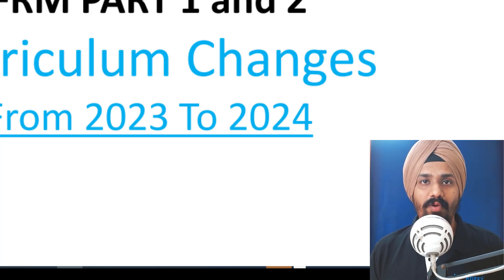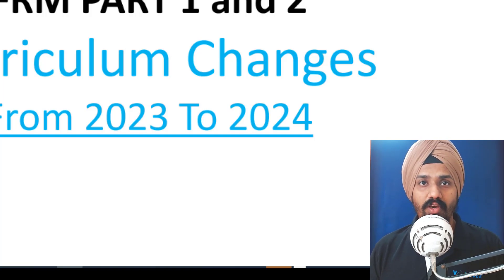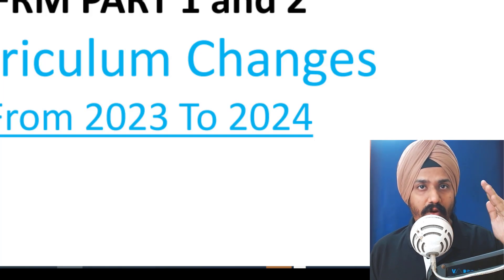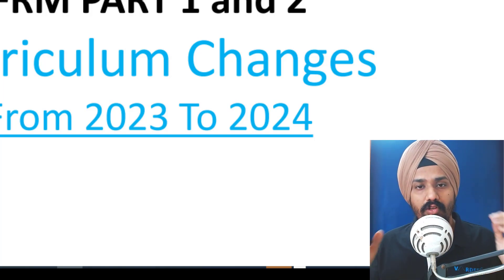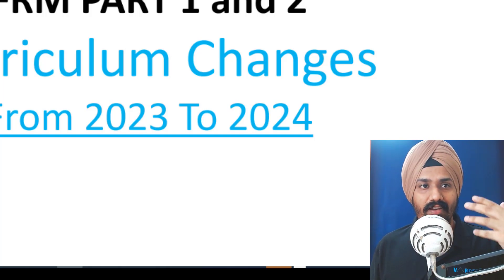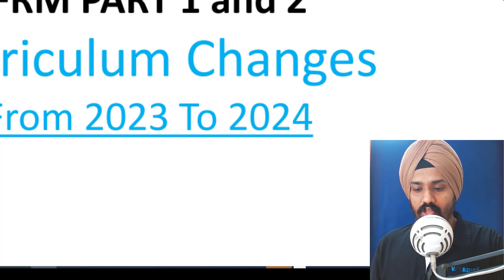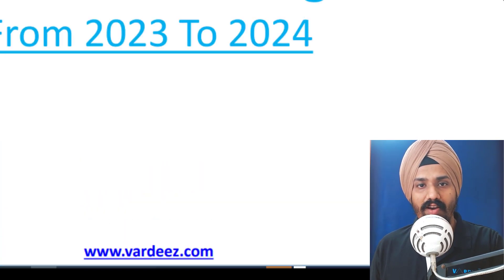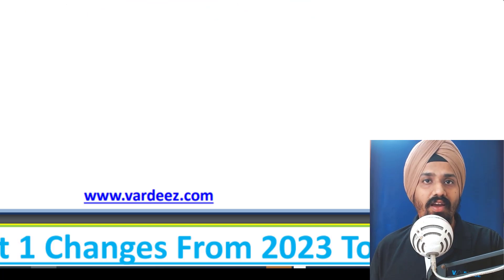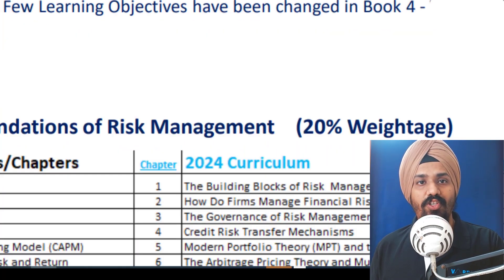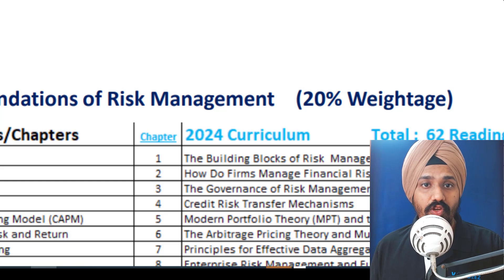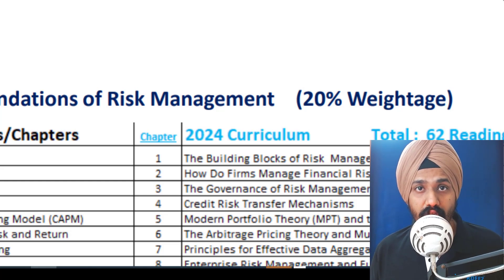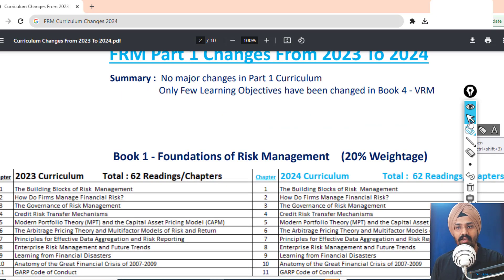Hey, welcome back everyone. Today GARP has released the official learning objectives for FRM Part 1 and Part 2, outlining the curriculum changes for 2024. In this video we're going to be talking about the curriculum changes for both parts. I have created a PDF for the curriculum changes, and if you want you can also purchase Part 1 and Part 2 lectures or packages from our website, www.wordies.com.